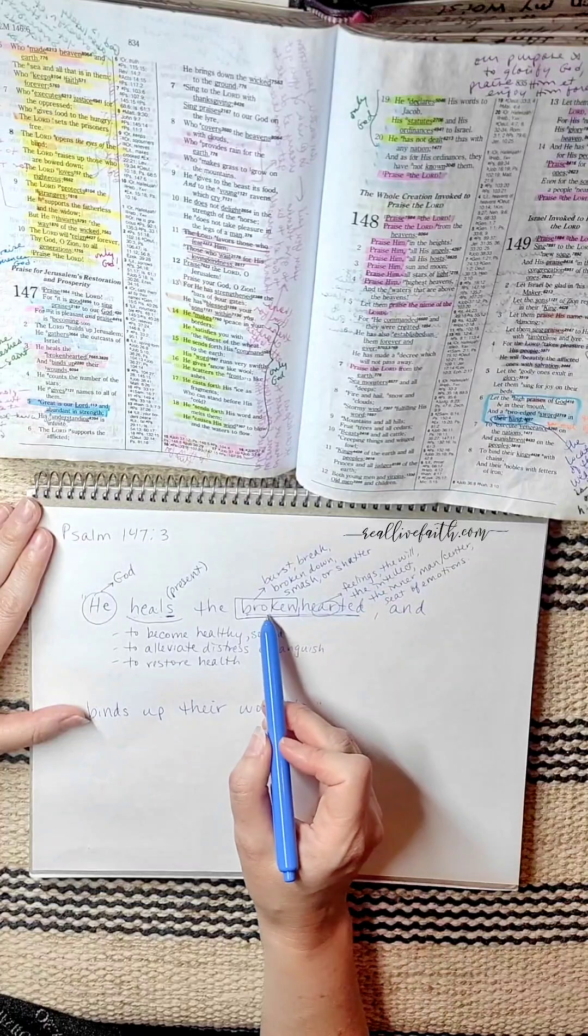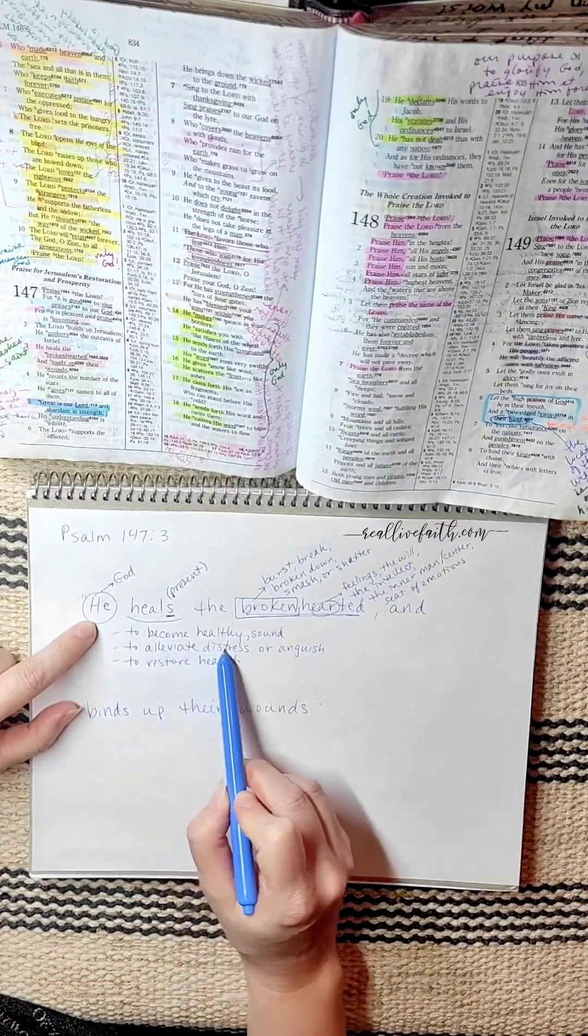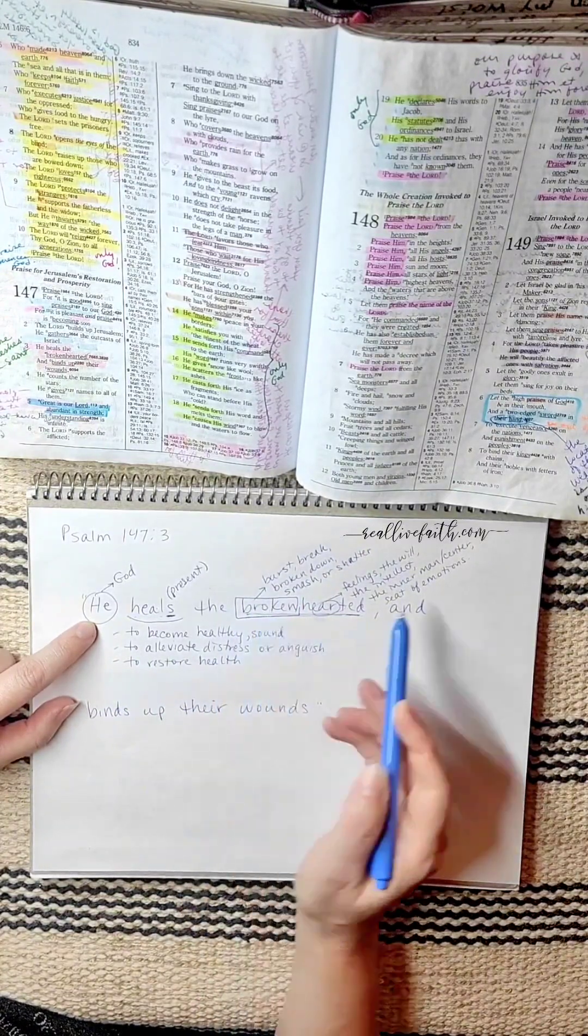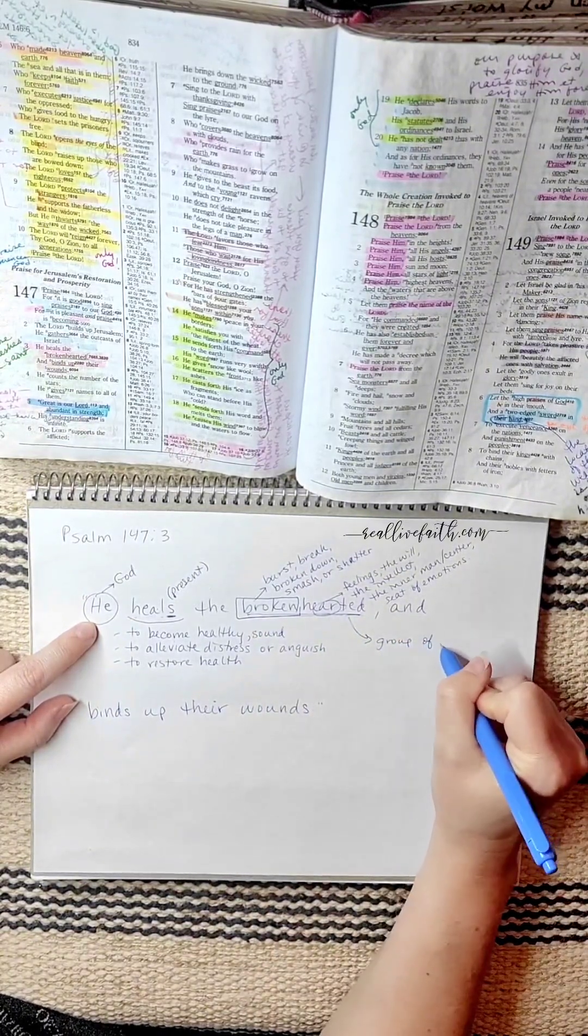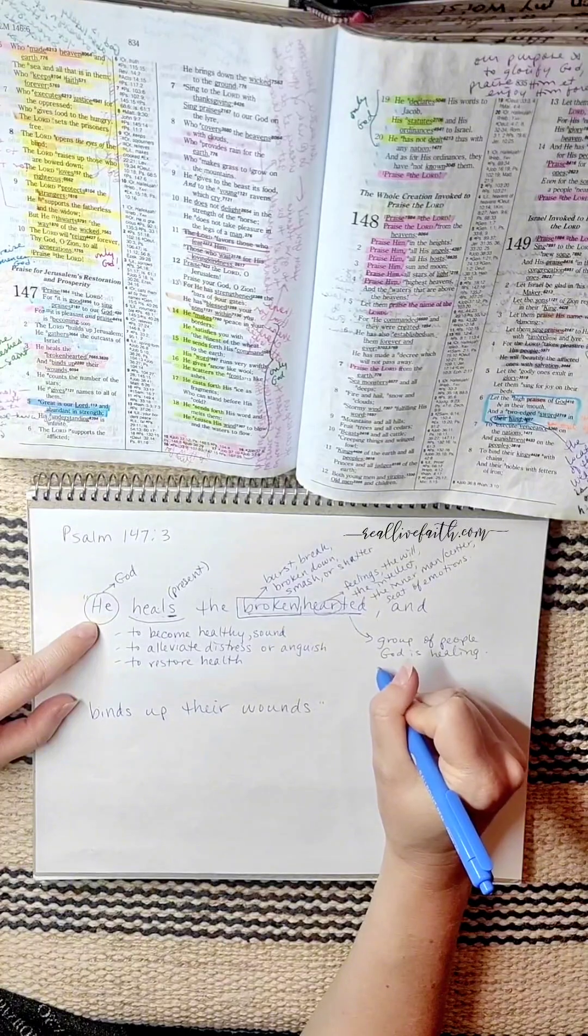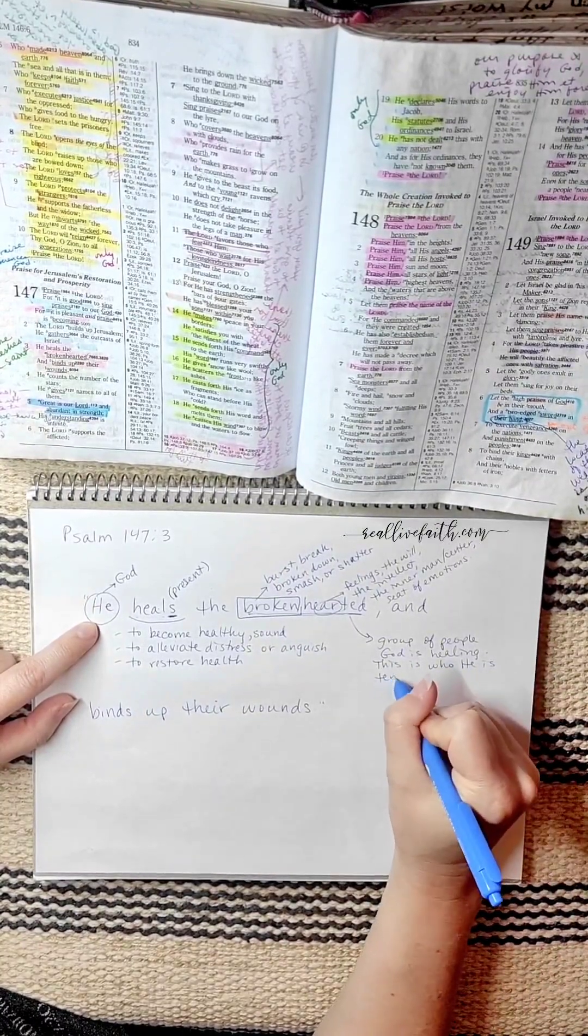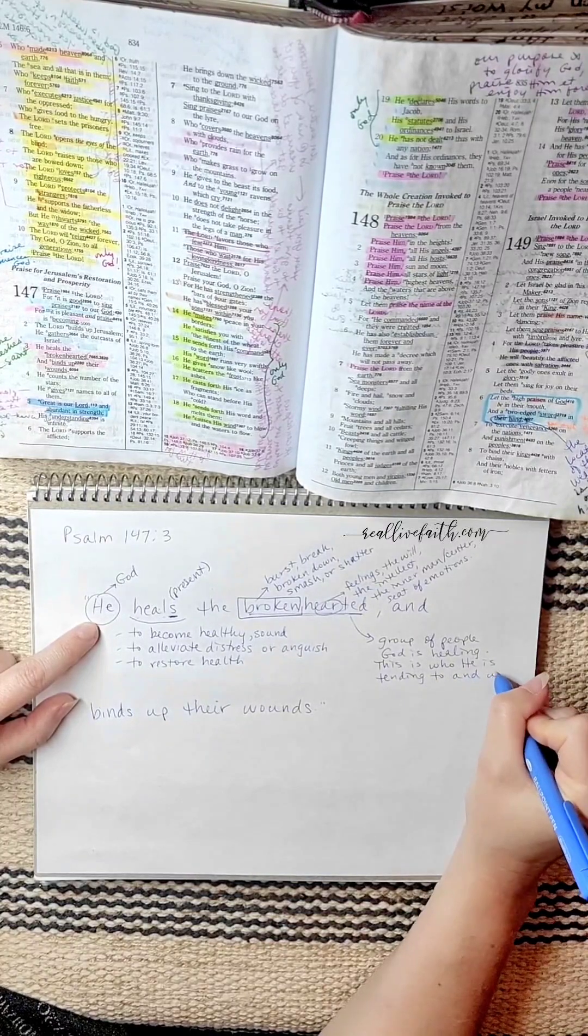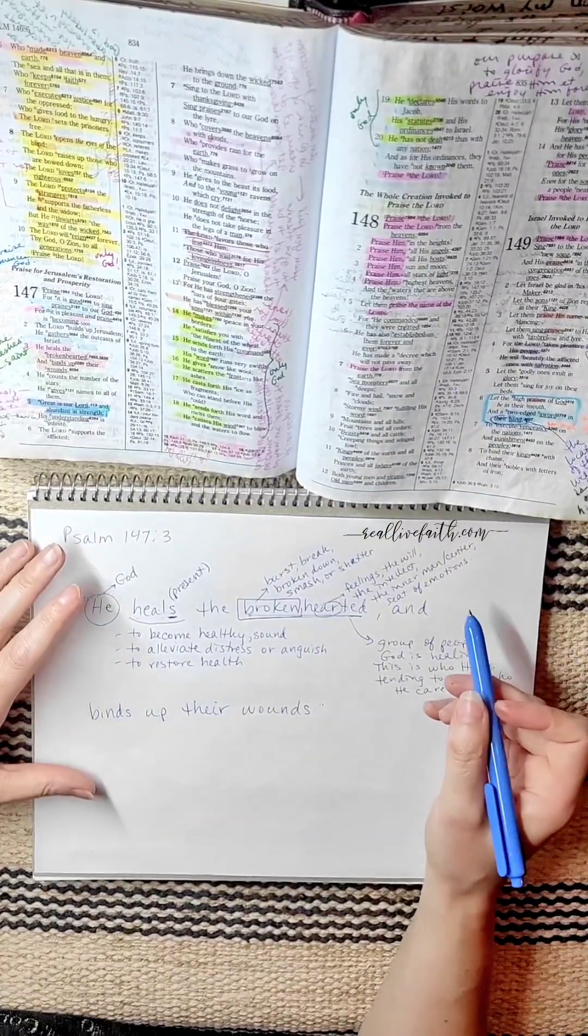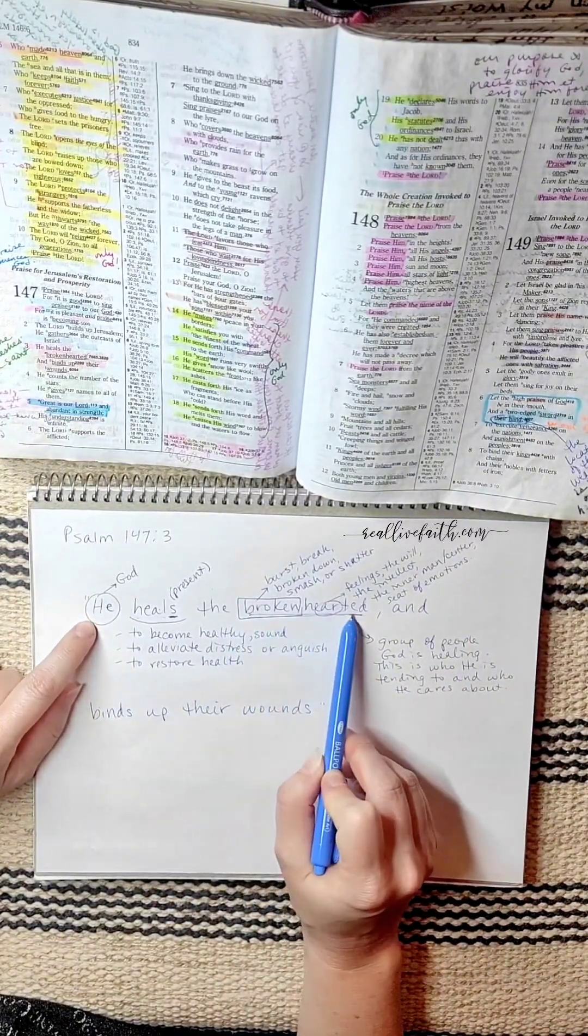And so what's important to know is, let's go back again. God is healing. So God is making healthy. God is alleviating distress or anguish. He's restoring health. Health to who? The broken hearted. This right here is the group of people God is healing. This is who he is tending to and who he cares about. So the psalmist is drawing our attention to that fact. That God cares about a group of people who are described as broken hearted.